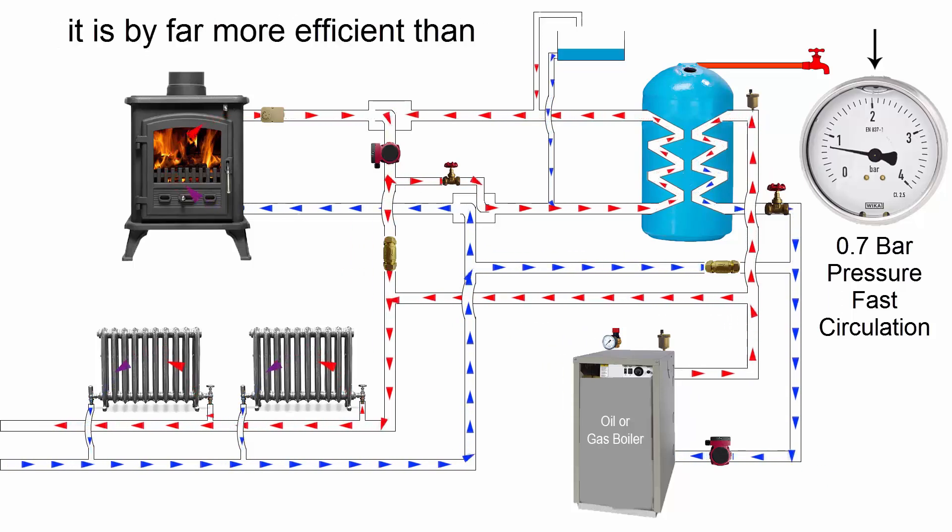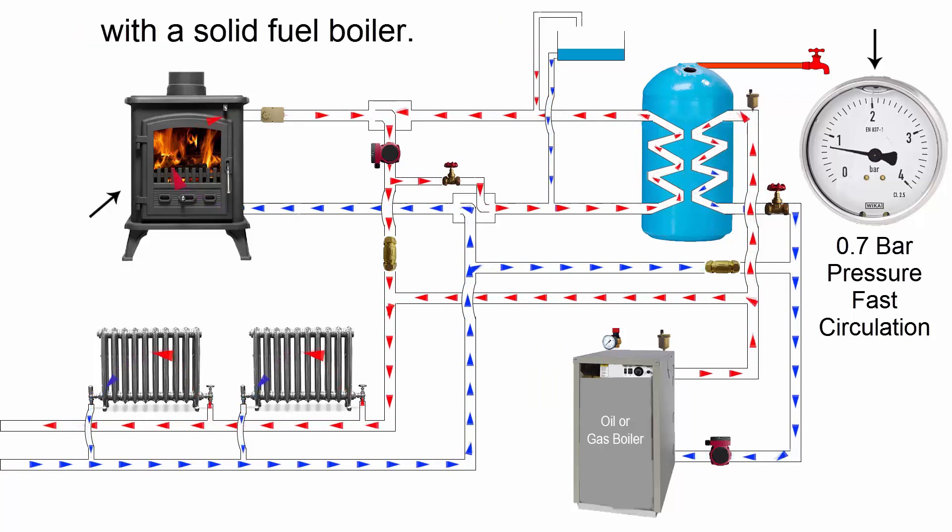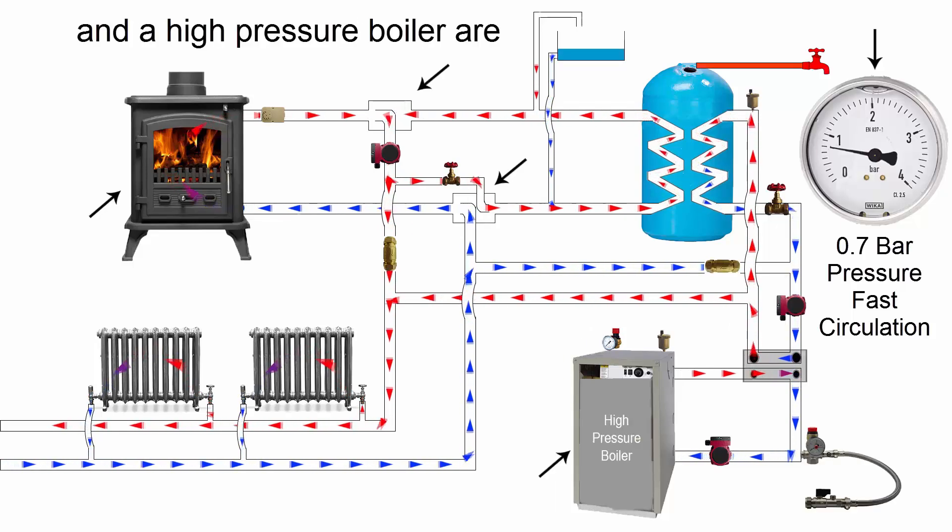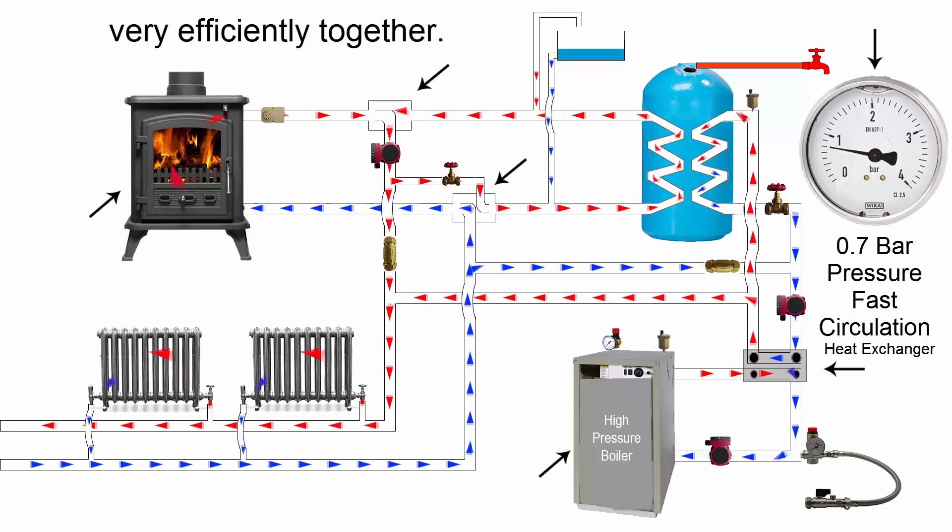Because Heat Hero creates approximately 0.7 bar of pressure in an open vented dual heating system, it is by far more efficient than a heat exchanger when installed with a solid fuel boiler. When a solid fuel boiler and a high pressure boiler are combined, Heat Hero and a heat exchanger work very efficiently together.